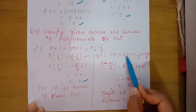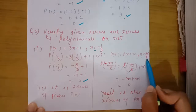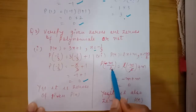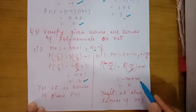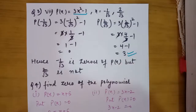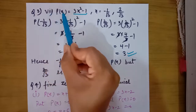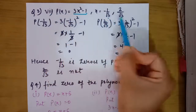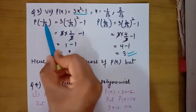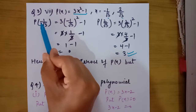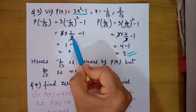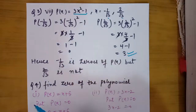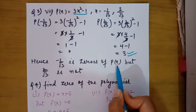In another part, p(x) equals lx plus m and the given value is x equals minus m upon l. We replace the variable with minus m upon l throughout the polynomial. Here l cancels with l, giving minus m plus m, which equals 0 — yes, it is also a zero of p(x). In the next part, p(x) equals 3x squared minus 1 with two different values of x. Taking the first value, we replace x with minus 1 upon root 3 — because of the square it becomes 1 upon 3, the 3 cancels, and 1 minus 1 equals 0 — so minus 1 upon root 3 is a zero of p(x).